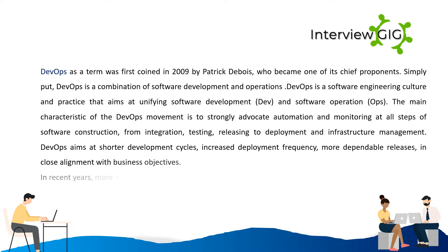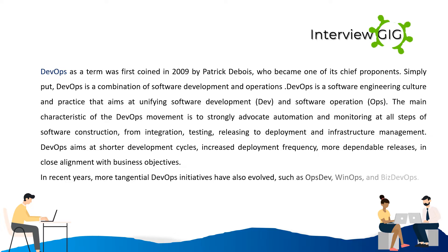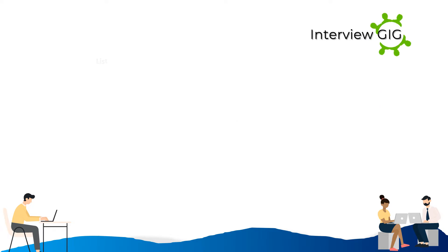DevOps aims at shorter development cycles, increased deployment frequency, more dependable releases, and close alignment with business objectives. In recent years, more tangential DevOps initiatives have also evolved, such as OpsDev, WinOps, and BizDevOps.